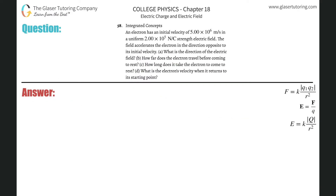Number 58, integrated concepts. An electron has an initial velocity of 5 times 10 to the 6 meters per second in a uniform 2 times 10 to the 5th newton per coulomb strength electric field. The field accelerates the electron in the direction opposite to its initial velocity. Letter A: what is the direction of the electric field?